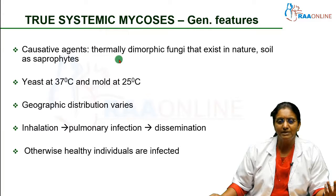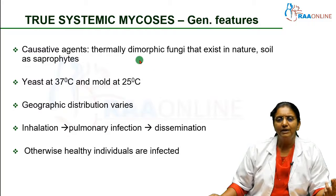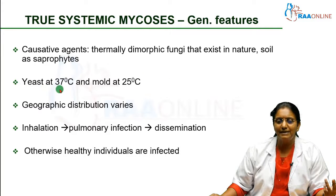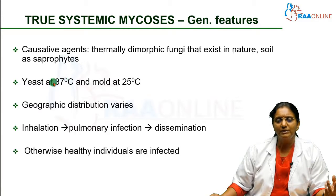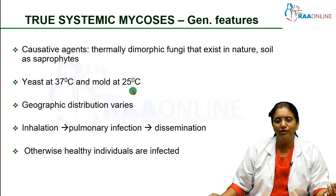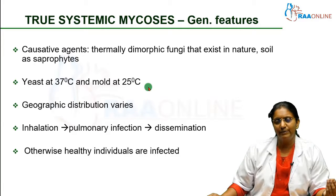Thermally means it is temperature determined and dimorphic means having two different morphologies. These four fungi exist in nature and in the soil as saprophytes and they can show two different morphologies. They exist as yeast — the spherical forms — at 37 degrees centigrade, which is our human body temperature, and they exist as mold, the mycelial form, at 25 degrees centigrade, that is at lower temperatures.